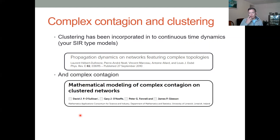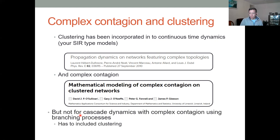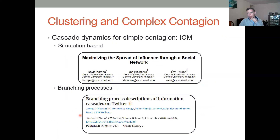We took that framework accounting for clustering and extended it to a complex contagion SI-type model on networks. We did some nice work around that. But as far as I can tell, there are no papers that look at complex contagion cascade dynamics using branching processes, because it's actually quite difficult to account for clustering on networks. This is what we're going to attempt to do.